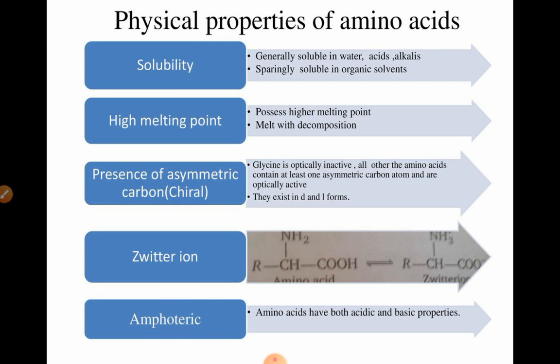The physical properties of amino acids include solubility, high melting point, presence of asymmetric carbon, zwitterion, and amphotericity. Generally, amino acids are soluble in water, acids, and alkalis, and they are sparingly soluble in organic solvents. They have a high melting point and melt with decomposition.